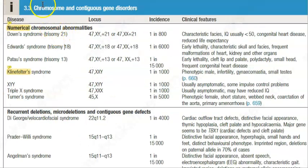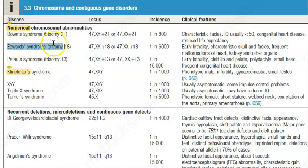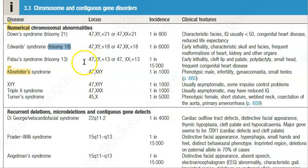Now let's go to the textbook and look at the chromosomal abnormalities — we are not looking at the contiguous gene disorders table at the bottom. Under numerical autosomal chromosomal abnormalities, you will find Down syndrome (trisomy 21), Edwards syndrome (trisomy 18), and Patau syndrome (trisomy 13) — meaning three copies of chromosome 13 are present instead of two.